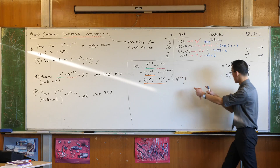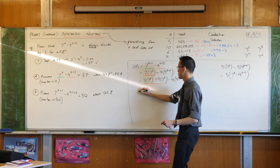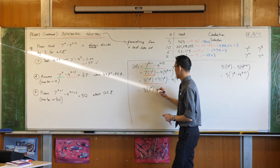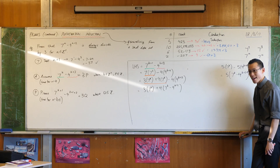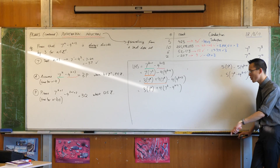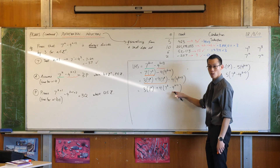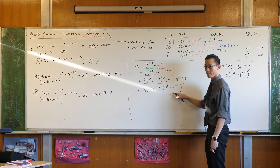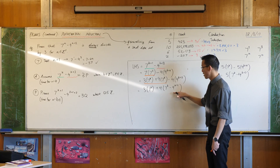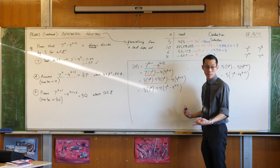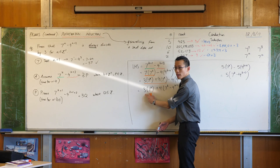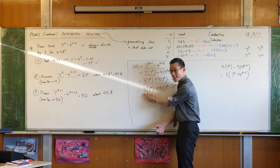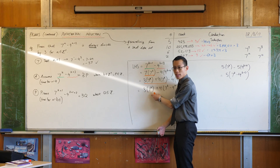Now I have this situation which is just like what I have over here — I can factorize. 3 lots of this plus 4 lots of this. I'm almost there. See this number here — what have I assumed about this number? I've assumed this number is divisible by 3. So therefore this whole thing, when you multiply by 4, it's still divisible by 3. What about this other part? It has to also be divisible by 3 because it's 3 times something that's a whole number.